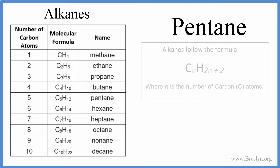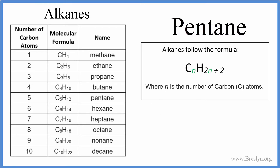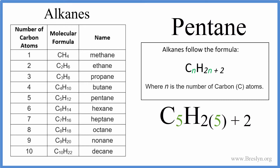If we want to write the formula, we can use a pattern that we see in the table for the alkanes. So if we know the number of carbons, we have C times the number of carbons, and then H, two times the number of carbons, plus two. So that gives us C5H12, and that's the formula for pentane.